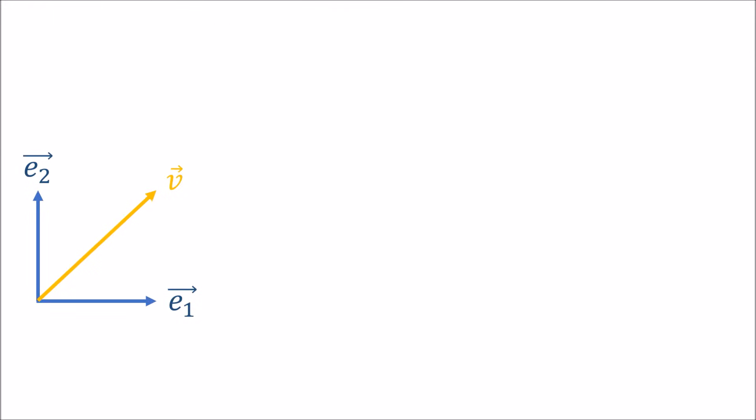So here I have an old basis, E1, E2, and I have a vector V living in this space. And the components of V look like they're about 1, 1 in the old basis. Now what would happen if I increase the size of the basis vectors by a factor of 2?